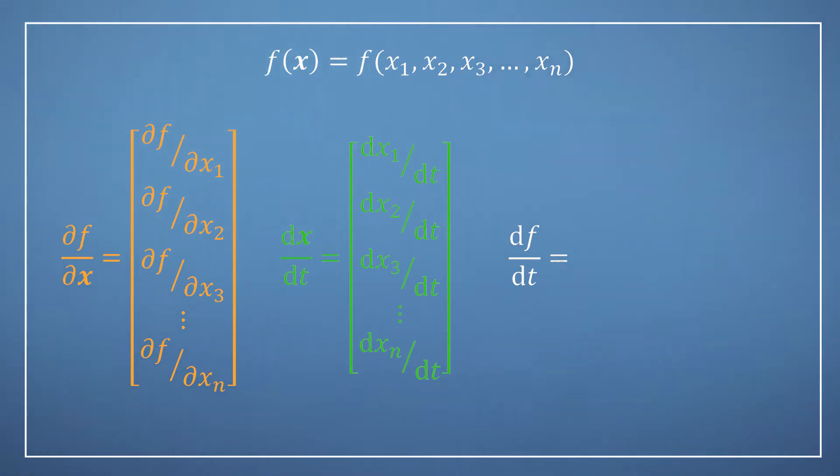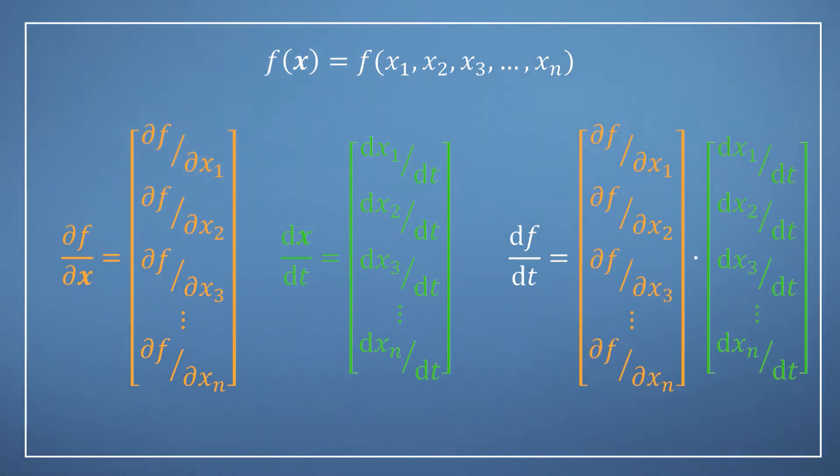Finally, we're looking to build a multivariable chain rule expression. So, we are looking to find the sum of the product of each pair of terms in the same position in each vector. Thinking back to our linear algebra, this is exactly what the dot product does.